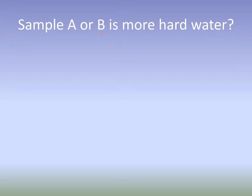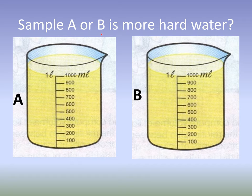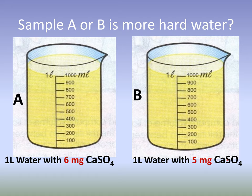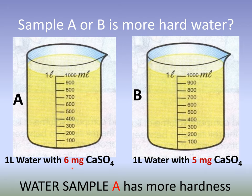In the first example, we compare sample A and sample B to find which has more hardness. Sample A has one liter of hard water with hardness caused by six milligrams of calcium sulfate. Sample B has one liter of hard water with hardness caused by five milligrams of calcium sulfate. Since the same salt is involved, it is easy to compare: sample A has more hardness.